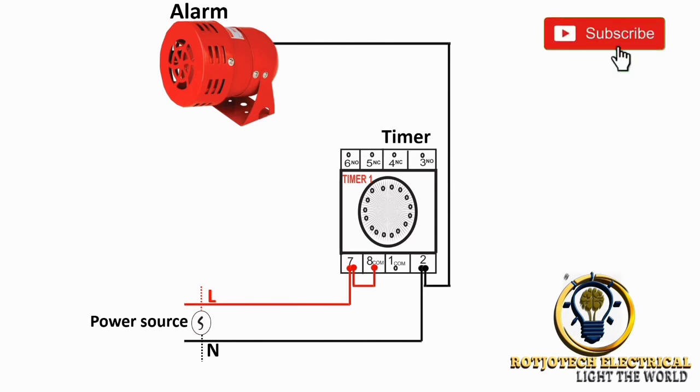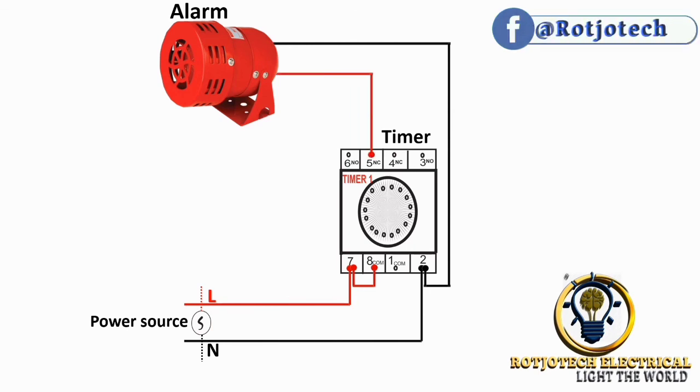But because of the kind of work that we want this timer to be doing, our output will come out from terminal number 5, normally closed, and it will serve as the second leg of this alarm. And with this, we are through with our connection.